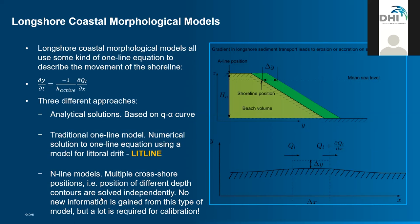There is also an upgraded version of the one-line model, the N-line model. This integration is done not for total sediment transport but for boxes limited by different lines parallel to the coast, so the position of different depth contours is solved independently rather than assuming a fixed beach profile shape. However, N-line models do not provide a lot of additional information compared to one-line models, and they are cumbersome to set up because a lot of information is required. So they have kind of been phased out and are not used much these days.